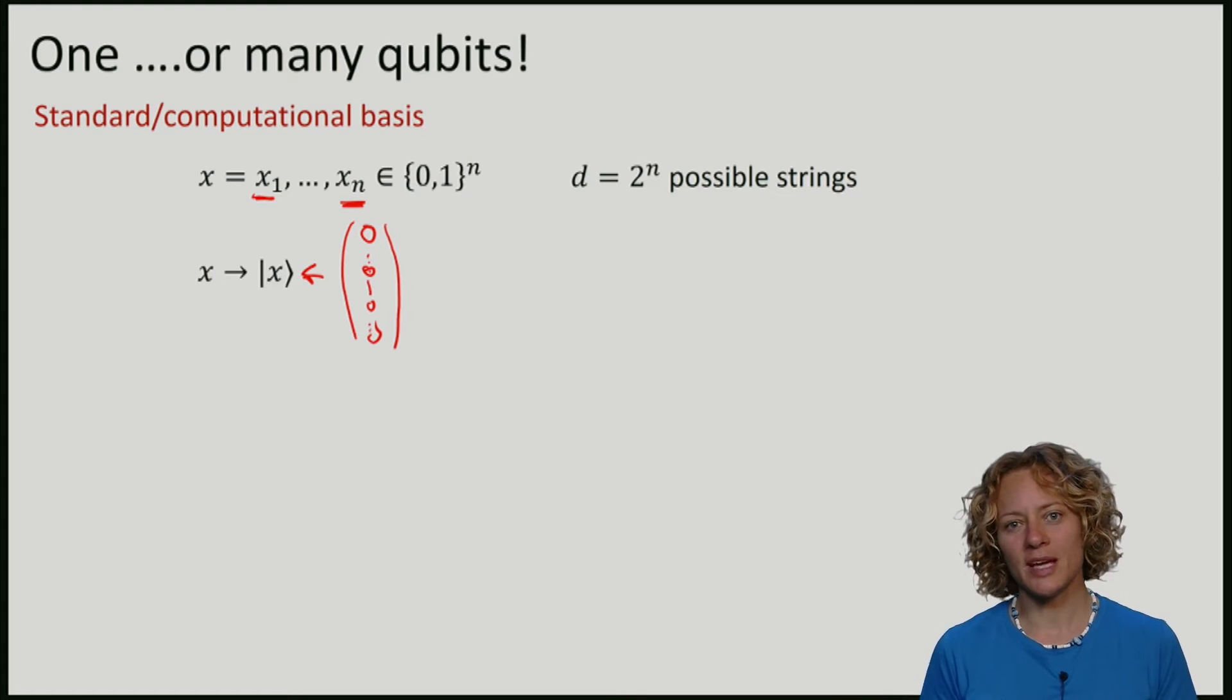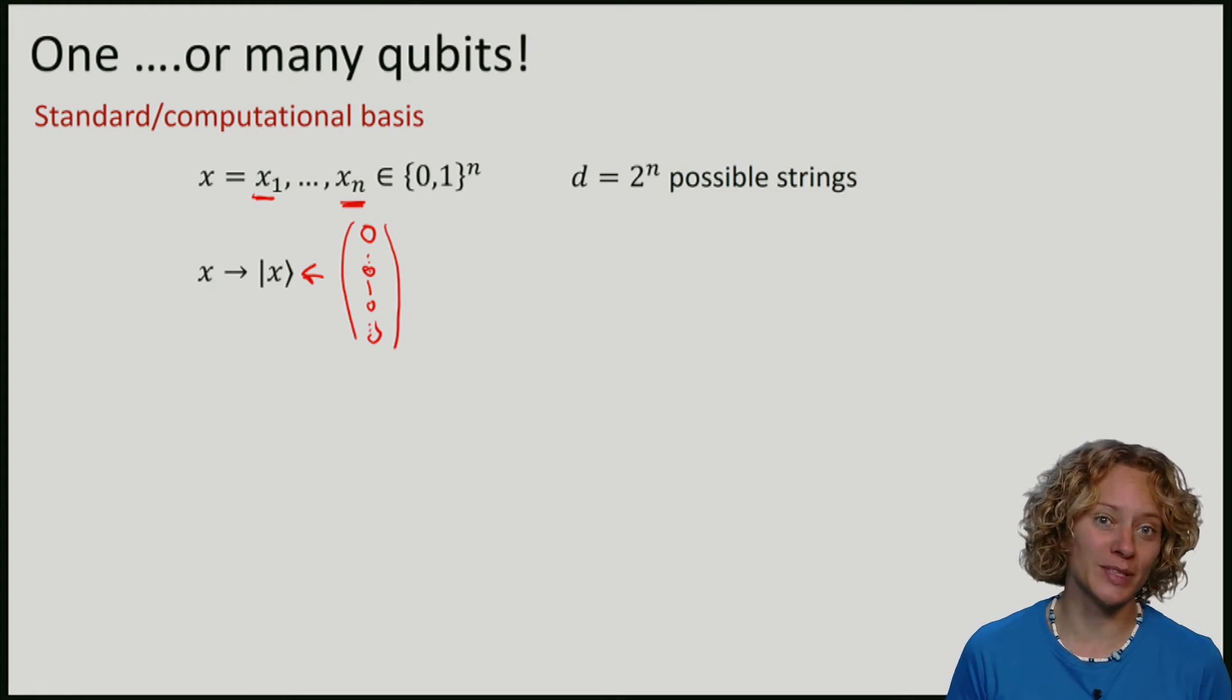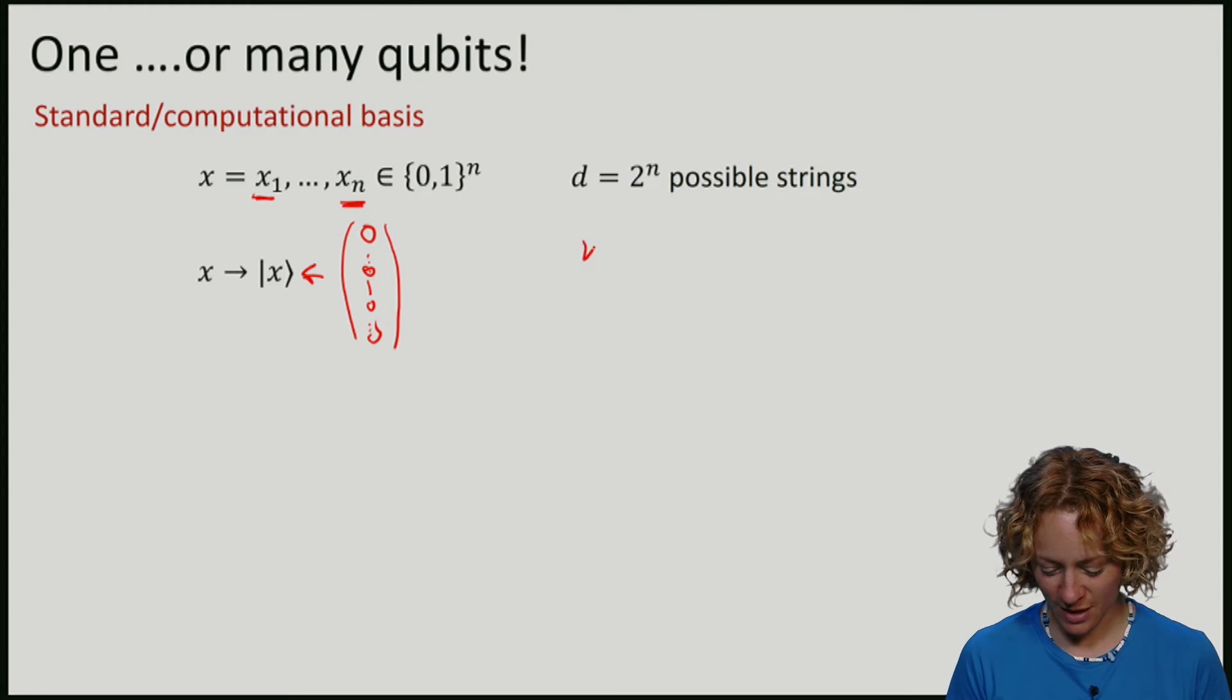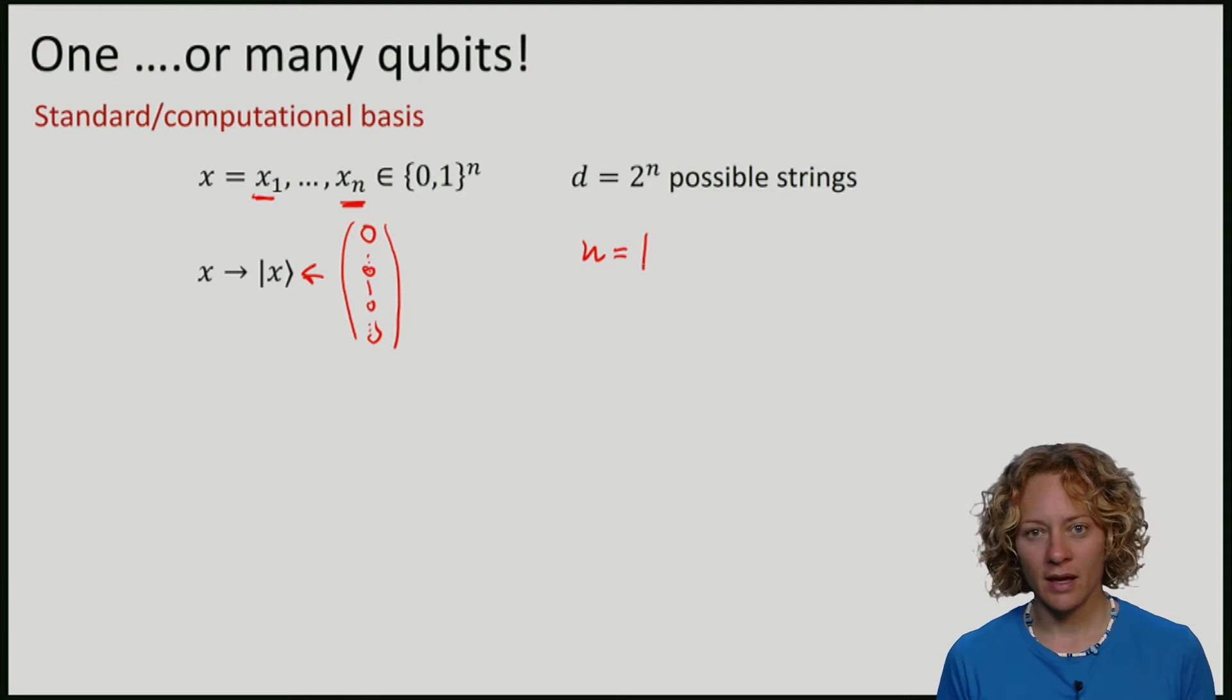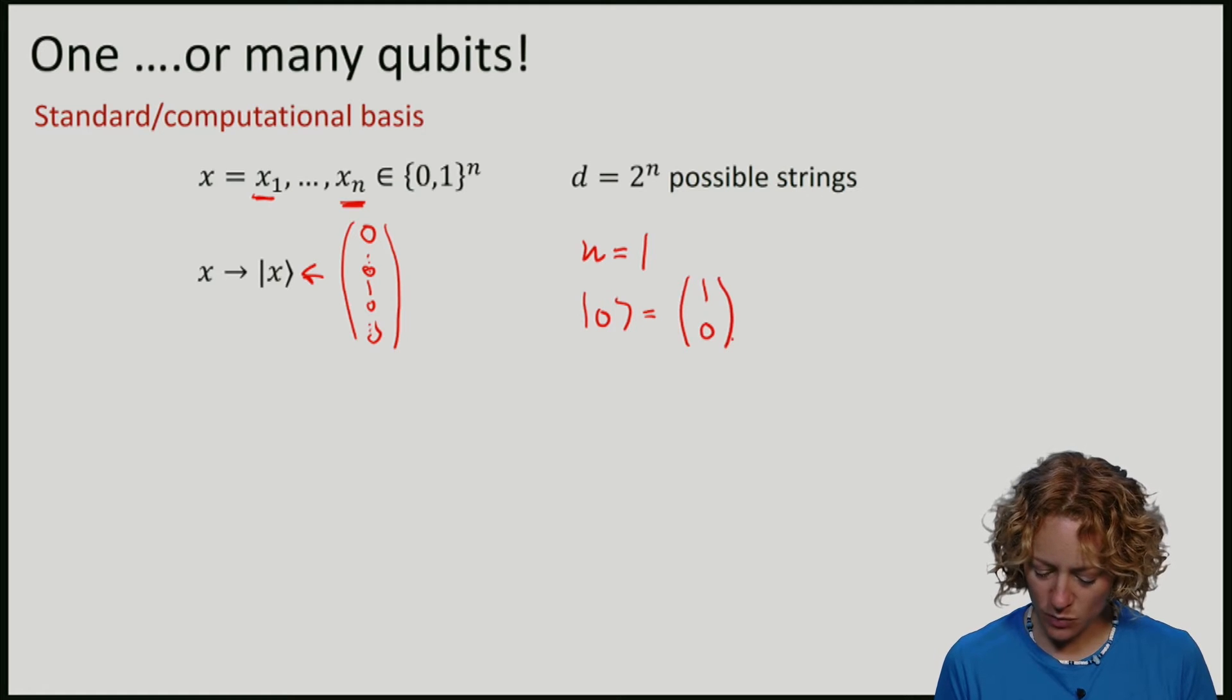There are 2 to the n possible strings, so we can think of x as a number between 1 and 2 to the n. Let's go back to the case of one qubit. Here n is 1. And 0 was the vector where I had a 1 in the first position and a 0 in the second one.